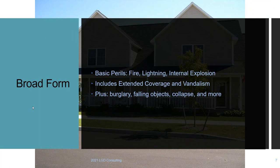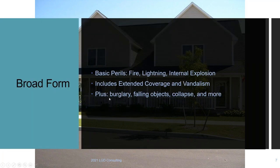Rather than buy the basic form and add extended coverages and VMM separately, just buy the broad form — the DP2. It covers all the basic perils (fire, lightning, internal explosion) plus extended coverages and vandalism automatically, and it adds additional perils. The basic form is a named-peril form and is very limited; broad form is also a named-peril form but covers more perils. I've emphasized falling objects, collapse, and burglary because those come up on contrast questions.